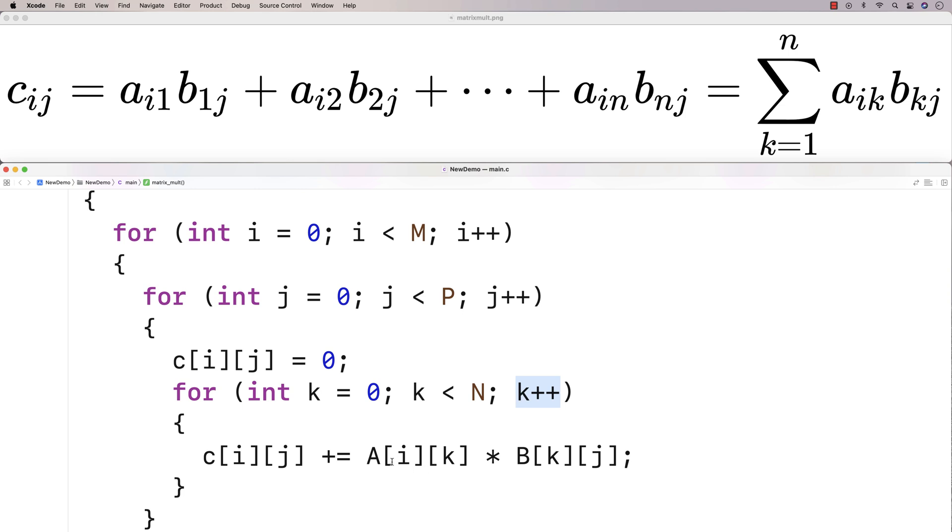Because we index A using k, and we index B using k, just as in this equation here, where we go from 1 to 2 to n. So that's just going to help us carry out this multiplication of those corresponding elements of A and B.